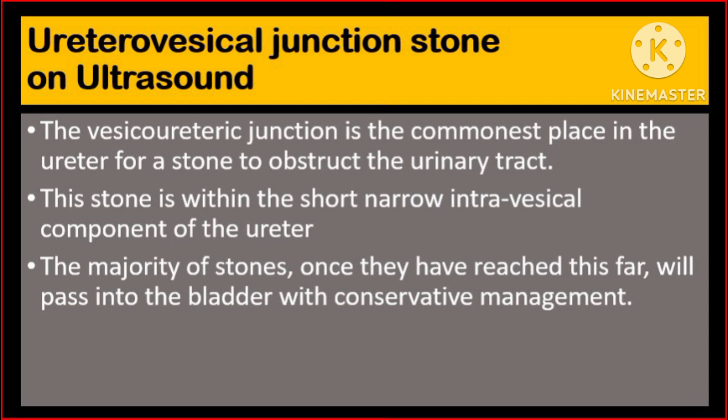The vesicoureteric junction is a common site in the ureter for a stone to obstruct the urinary tract. This stone is within the short narrow intravesical component of the ureter. The majority of stones, once they have reached this far, will pass into the bladder with conservative management.